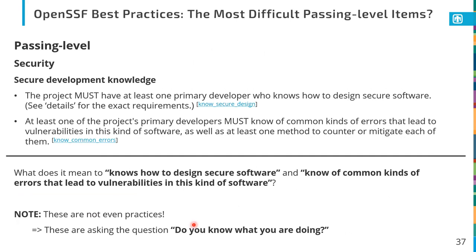In my view, for most projects and most people, these two passing-level security criteria are the most difficult to satisfy: the project must have at least one primary developer who knows how to design secure software, and at least one primary developer must know the common kinds of errors. Interestingly, these are not even practices — they're not things you have to actually do. These are really just asking the question: do you know what you're doing? I can't think of any of the other 129 practices that are just asking whether you're even educated enough to answer the later questions about software security.